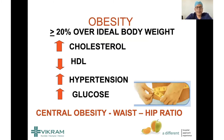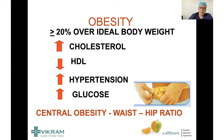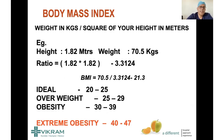Obesity means more than 20% above your ideal body weight. It increases bad cholesterol, decreases good cholesterol, causes high blood pressure, increases glucose levels, impairs glucose tolerance, and can lead to high sugar levels. Central obesity — obesity around the waist — is much more dangerous, measured by waist-to-hip ratio, which in Asians is a much better indicator than BMI.